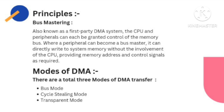Now I am going to tell you about the principles of DMA Burst Master. It is the first part of the DMA system. In this, the CPU and other devices can be granted control of the memory bus. The Burst Master is the peripheral which writes to system memory directly without any involvement of the CPU, also providing memory addresses and control signals as required. Here are the three modes of DMA transfer: first is Burst Mode, second is Cycle Stealing Mode, and third is Transparent Mode.